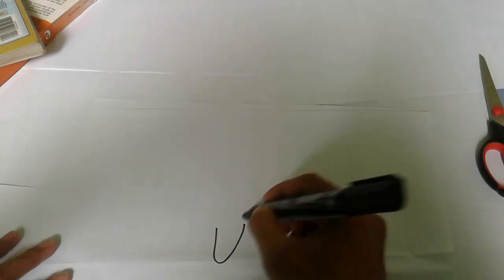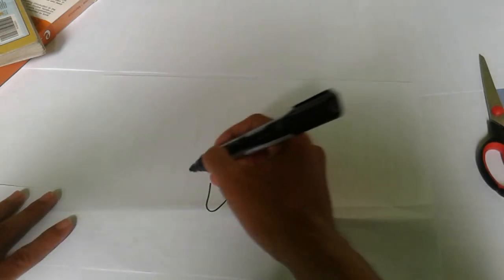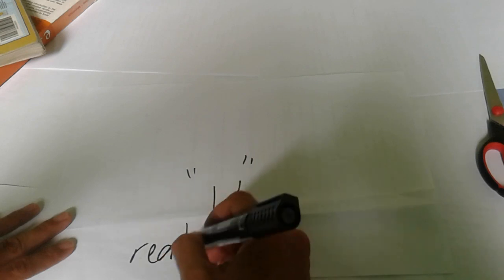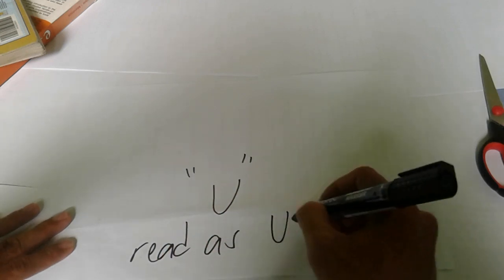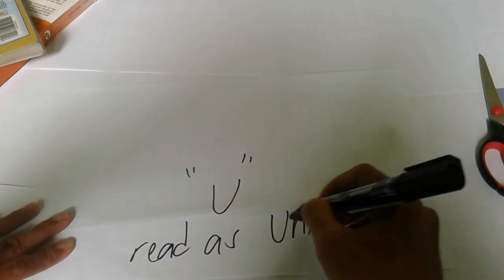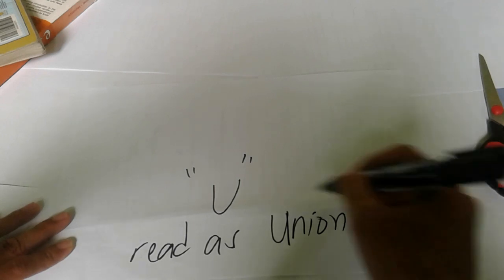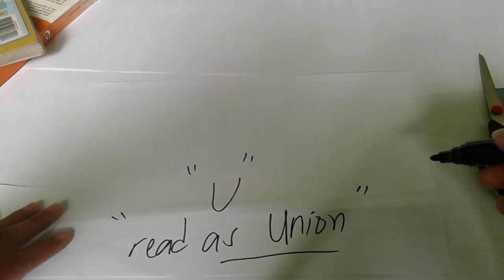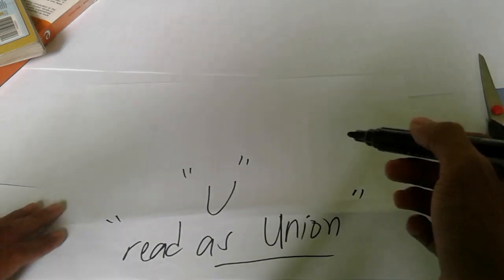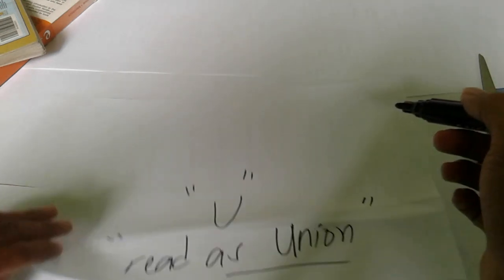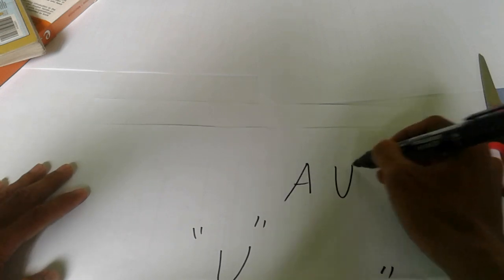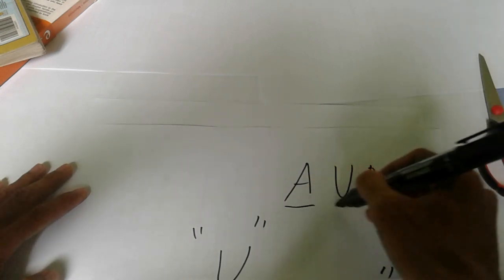Note that the symbol of the union is this one — read as 'union.' For instance, we have A union B, written as A union B.